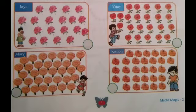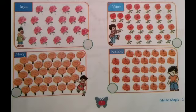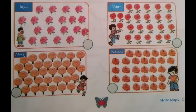How many flowers did Kishore count? Let's see. Kishore counts: 1, 2, 3, 4, 5, 6, 7, 8, 9, 10, 11, 12, 13, 14, 15, 16, 17, 18, 19, 20, 21, 22, 23, 24, 25, 26, 27, 28, 29, 30.